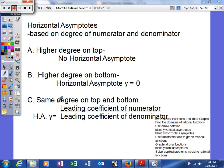And our last option is if we have the same degree on the top and the bottom. If that's the case, your horizontal asymptote is going to be the fraction of the leading coefficients. So it's going to be the leading coefficient of the numerator over the leading coefficient of the denominator.